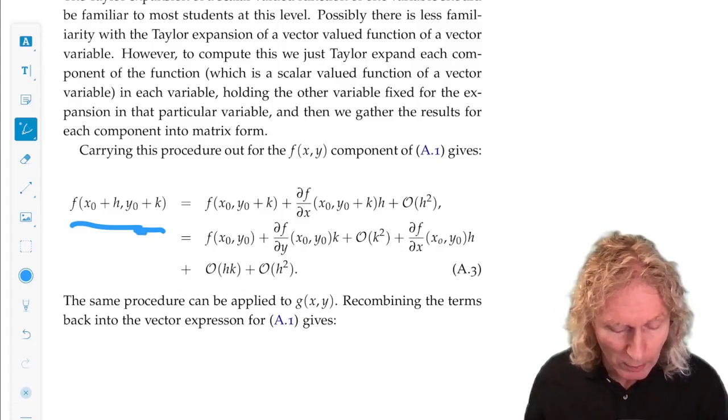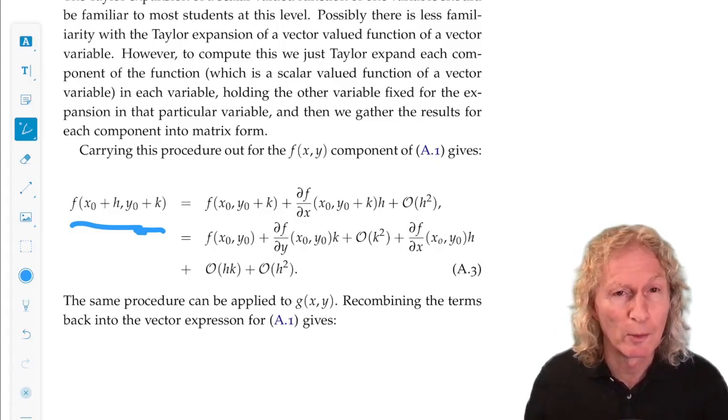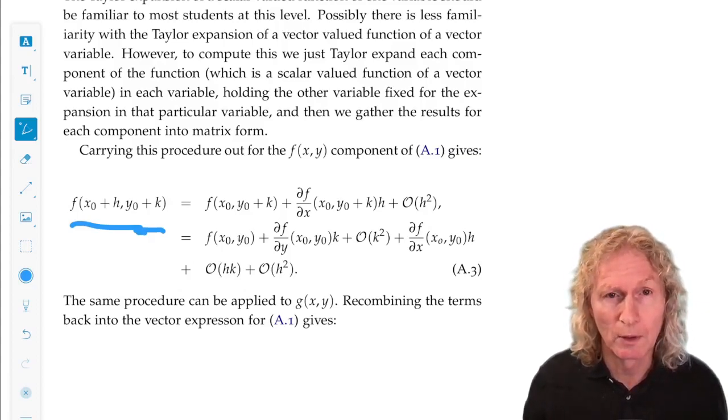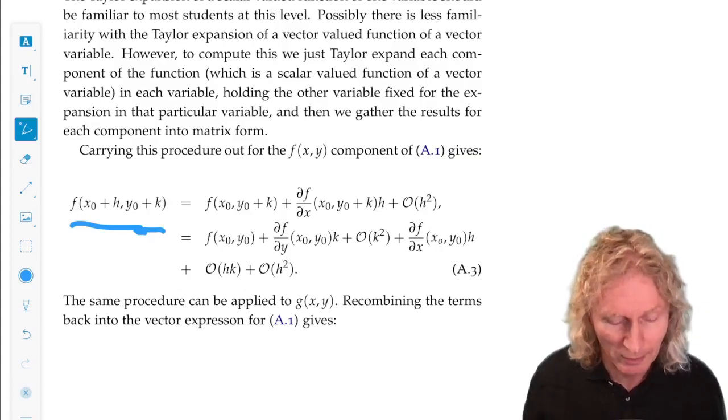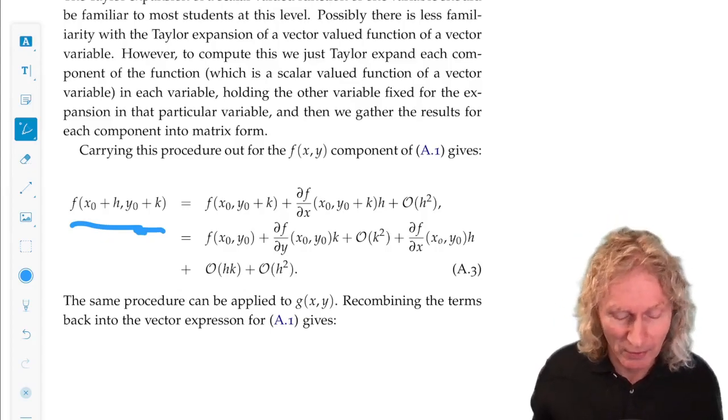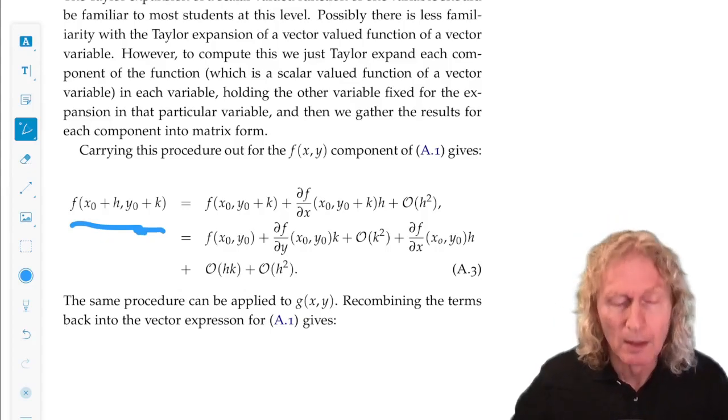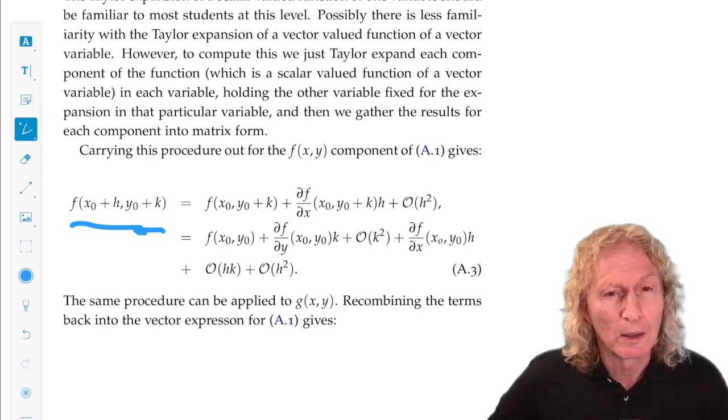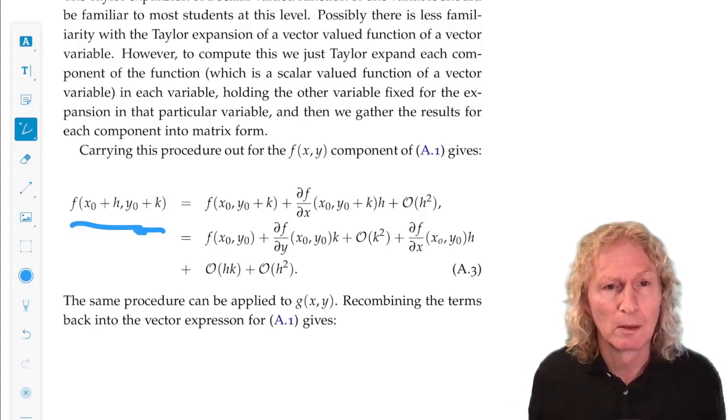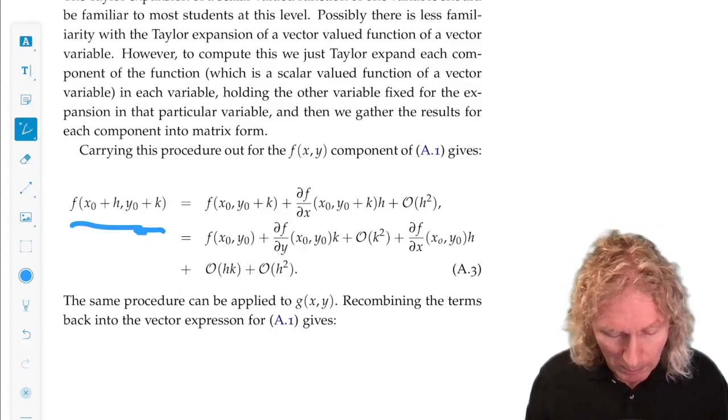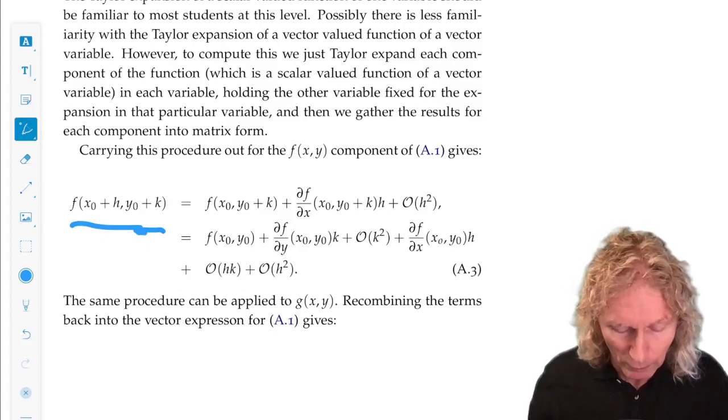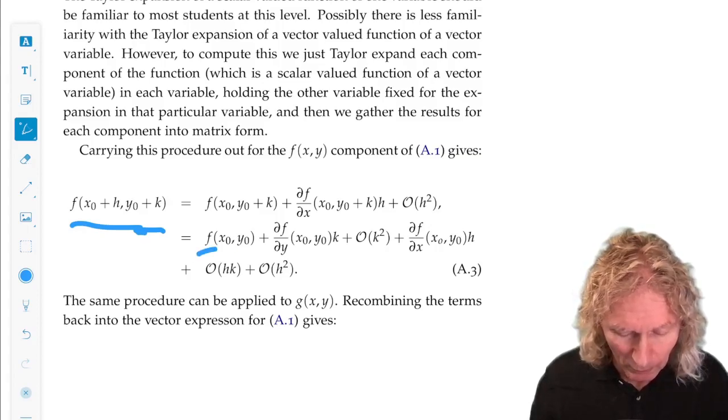What we do is we view one variable as fixed, y naught plus k, Taylor expand in x about x naught, and then we Taylor expand in the other variable, Taylor expand in y about y naught. And if we do that, just retaining the first order terms, this is what we get.